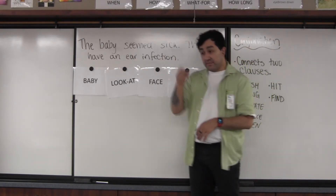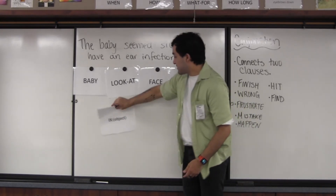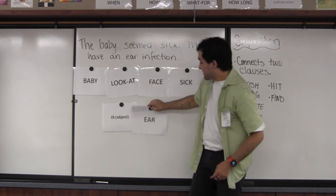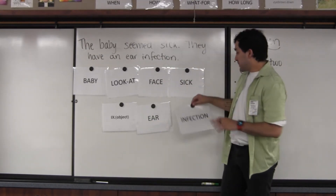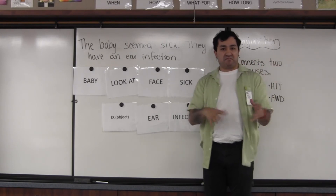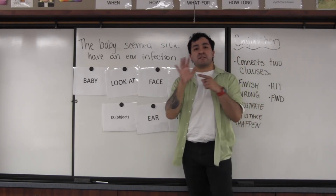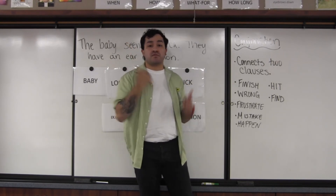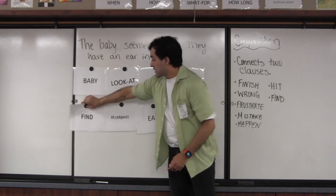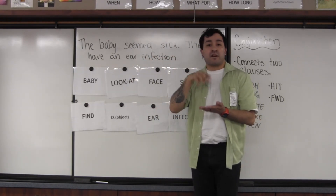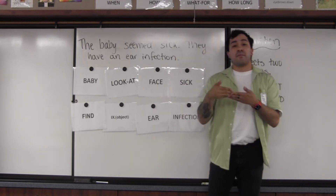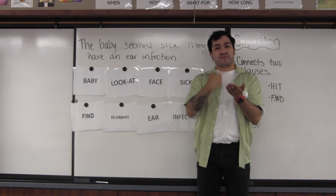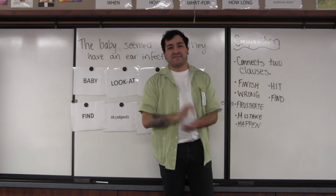They have an ear infection — so that's the second sentence, and we'll go ahead and add that. The baby itself — we're going to use the one that says 'object' for this, since the point is the point. So: the baby has an ear infection. We could just sign this, but this is actually a good point to use a conjunction and connect these two things. I think it'd be best to use the conjunction 'find' here — because I found out there was an infection. So: the baby, I looked at the face, sick, find, ear infection. In the next video we'll discuss another example and more conjunctions and how to use them.